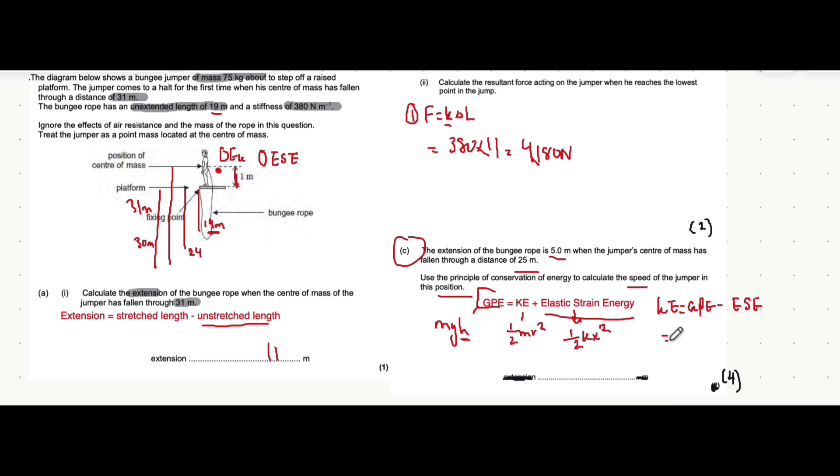Great, so let's use that. So mgh for gravitational potential energy is the mass that I mentioned before, 75, times g which is 9.8 or 9.81, times the height that it falls which is 25 meters. And we take away from that half kx squared, which is half times the spring constant of 380 multiplied by the extension squared, which is 5 squared.